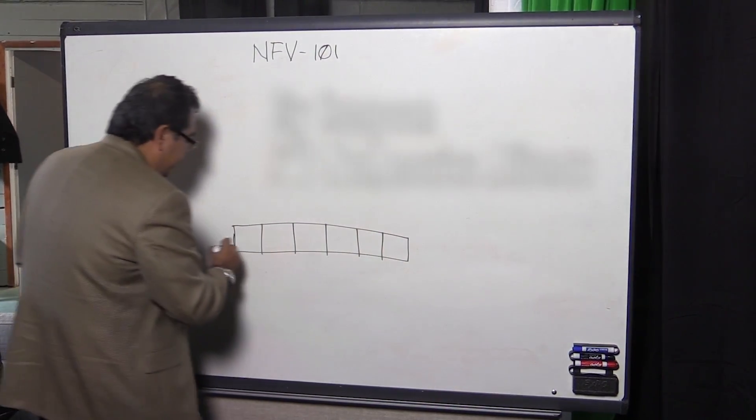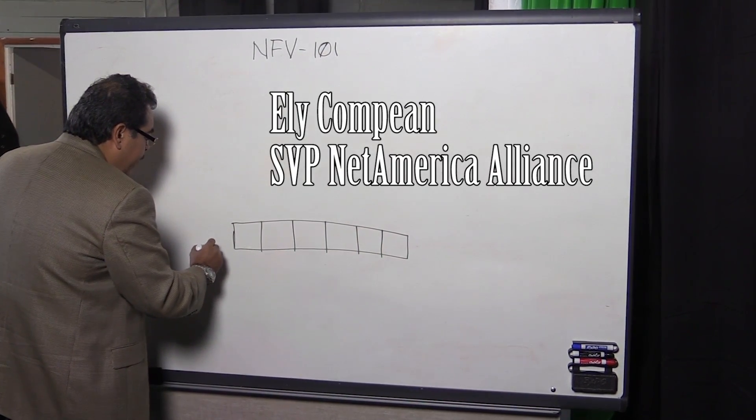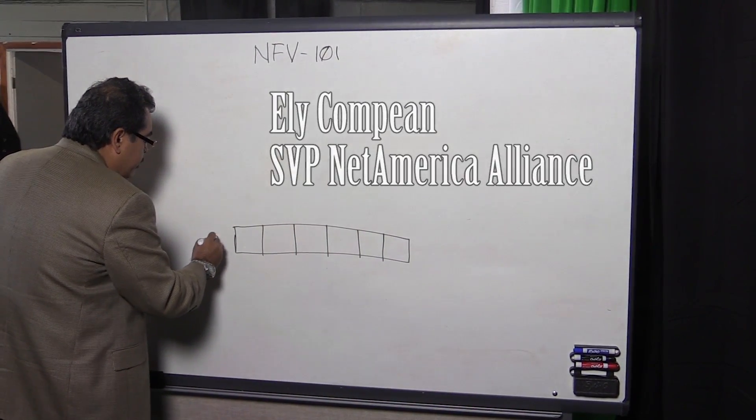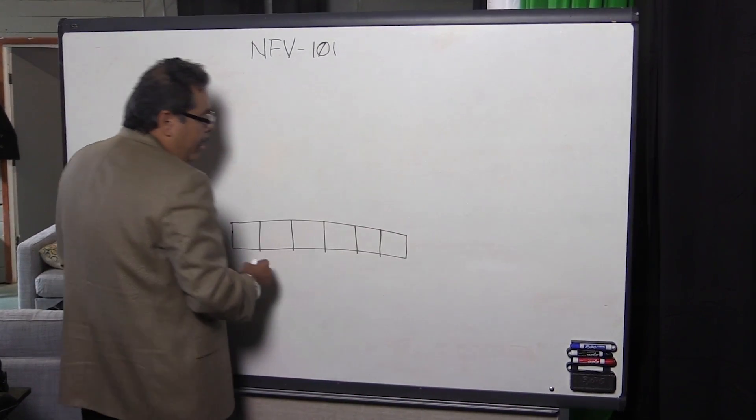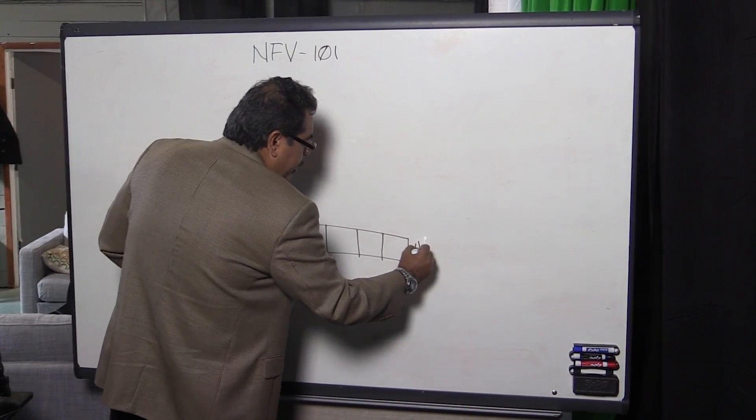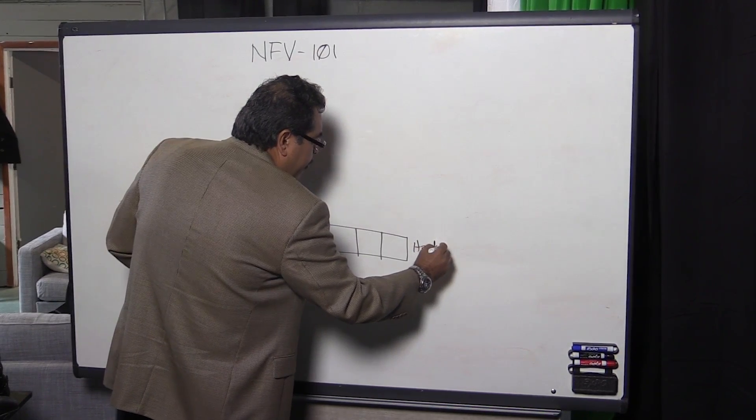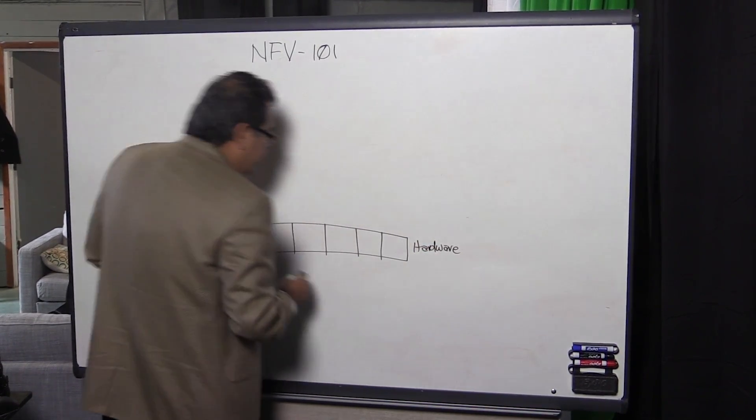What I wanted to do is just a quick NFV 101. So this is an x86 Intel platform. These are individual boxes. So this is hardware and at the end of the day for everything that we talk about, everything still relies on hardware.